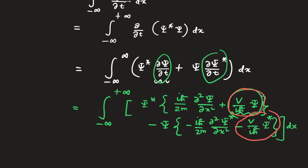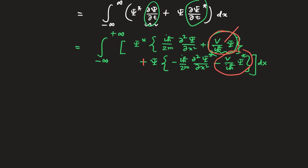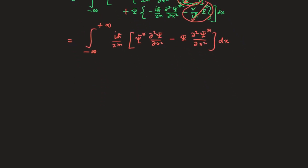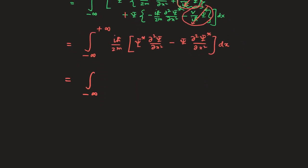After the correction — it should be plus — you can cancel the potential terms and you are left with the integral from minus infinity to plus infinity of ih-bar over 2m times ψ* del² ψ del x² minus ψ del² ψ* del x² dx.